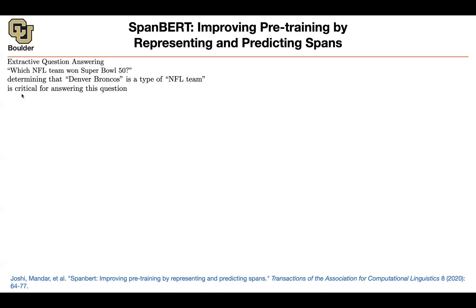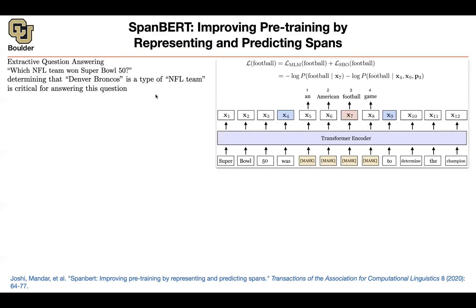It needs to take a look at a span of input text, and it is critical to observe that for answering this question. If you separate 'Denver Broncos' then the tokens don't have the same meaning as they would if you put them next to each other. The same is true for 'NFL team' and 'Super Bowl'. So masking individual tokens is perhaps inferior to masking sequences of consecutive tokens.